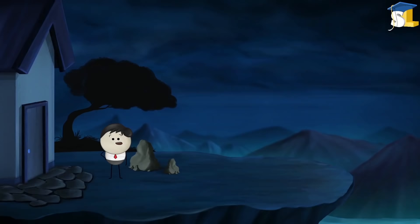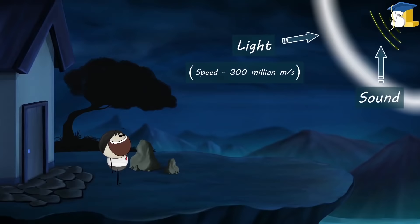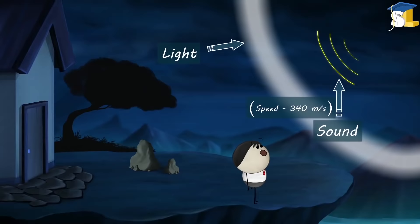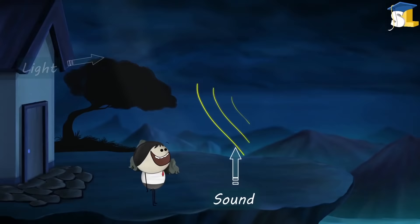An interesting fact is that lightning and thunder occur at the exact same time. Then why do we see lightning first? This is because light travels faster than sound. The speed of light is 300 million metres per second while the speed of sound is only 340 meters per second. Thus, the light from the lightning travels much faster to our eyes. As a result, we first see the lightning shortly followed by the sound of thunder.